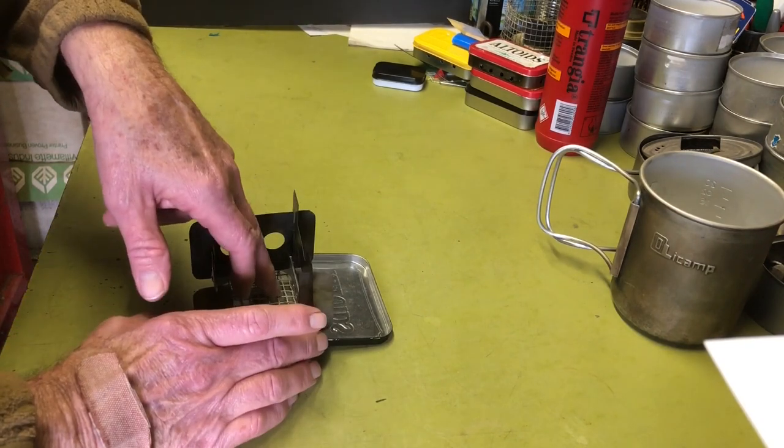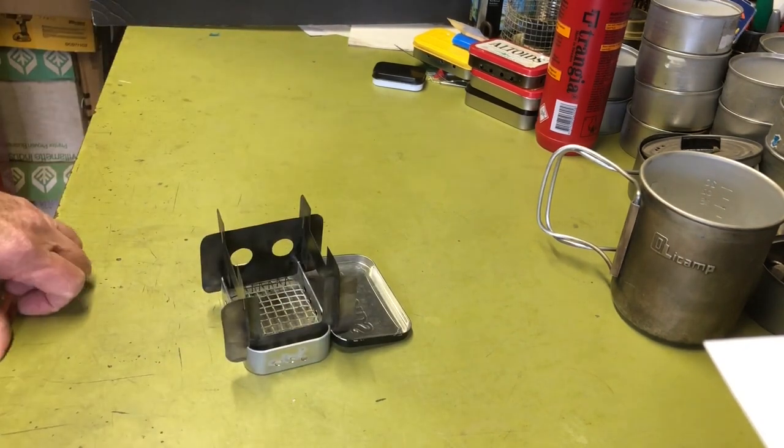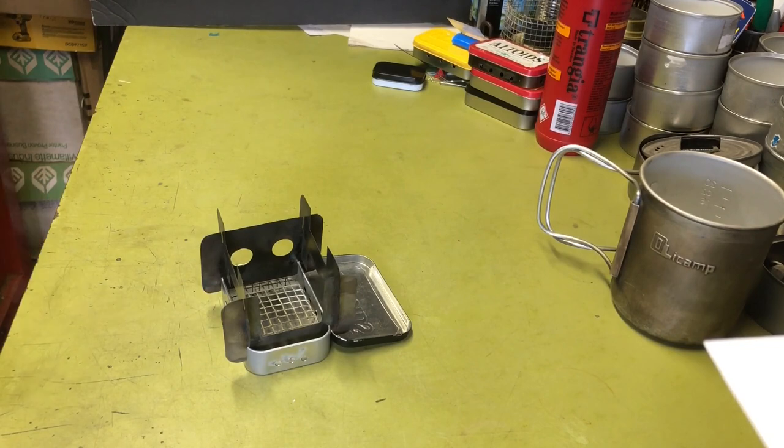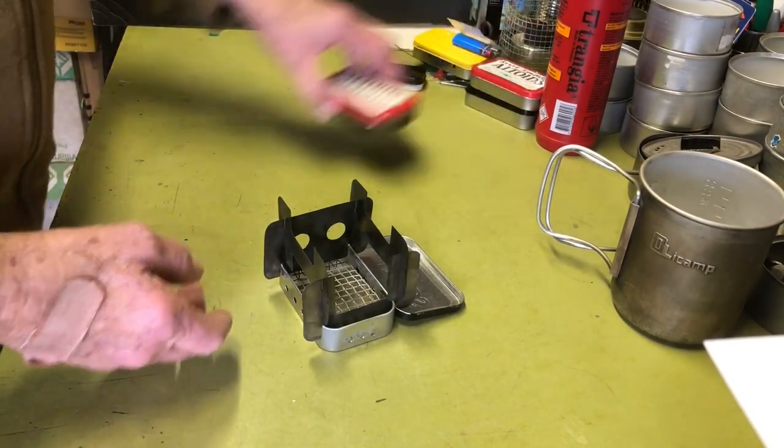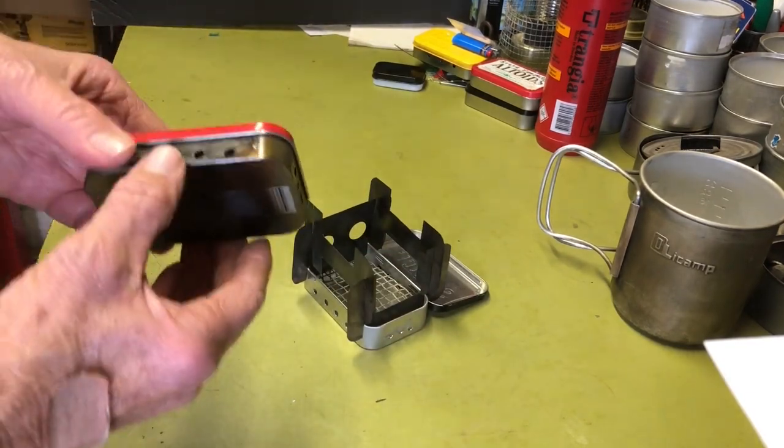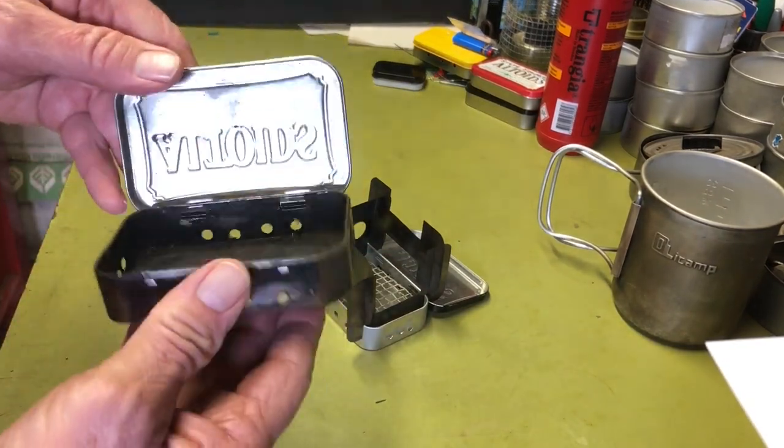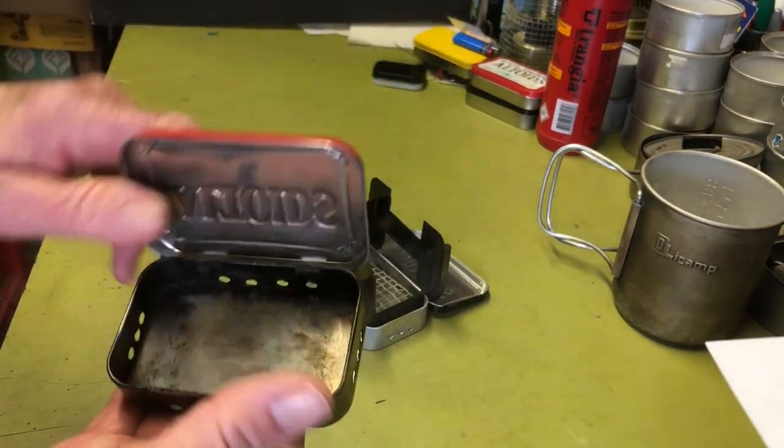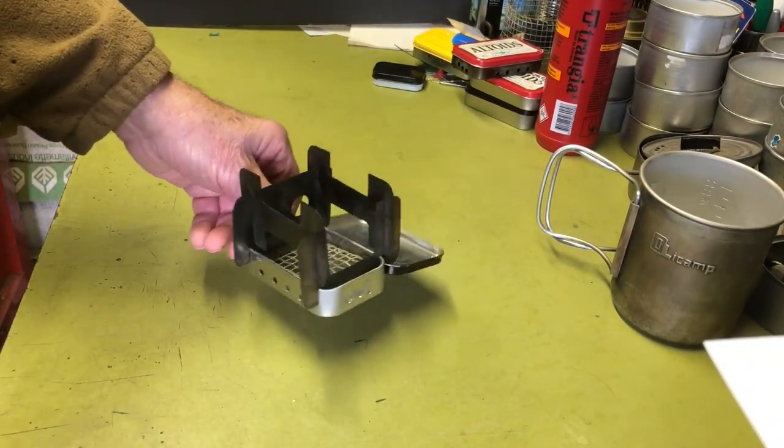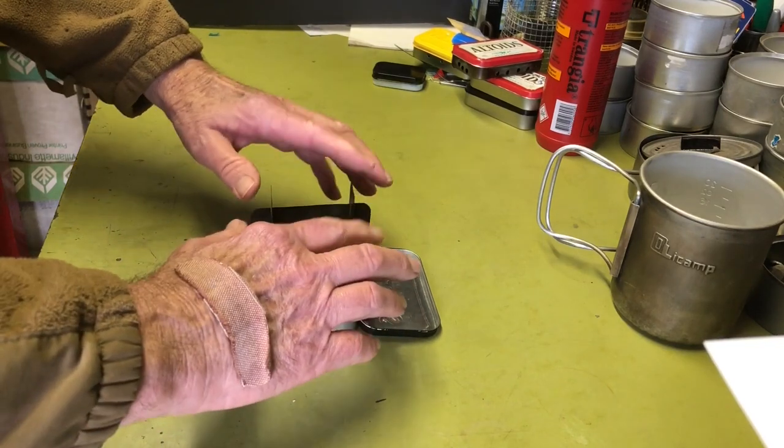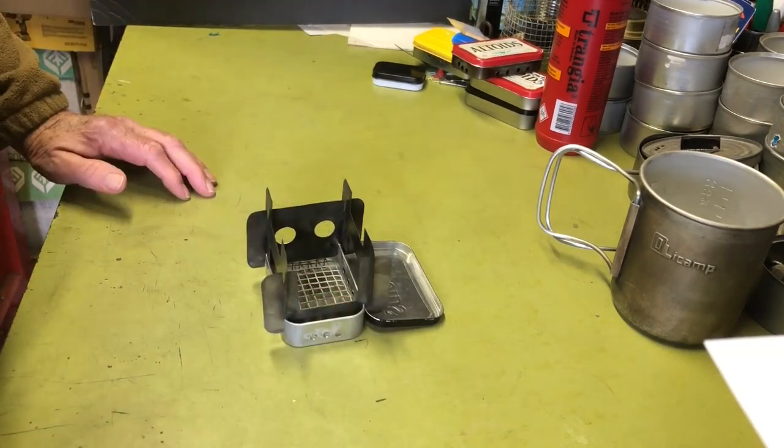Originally, I had it to fit in the whole bottom of the Altoid tin. But then, what happened was that I couldn't seat these ends here because they hit on top of the grate. Well, you only need this much grate anyway. So, you can see how the grate fits in there. And then you get good ventilation. This burns much cleaner, much nicer.